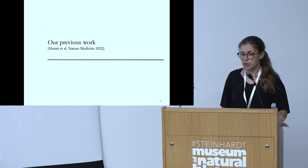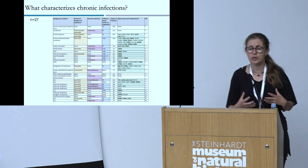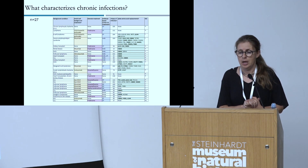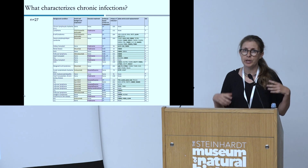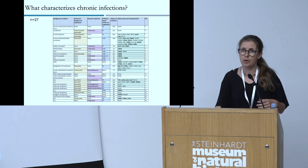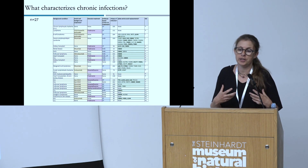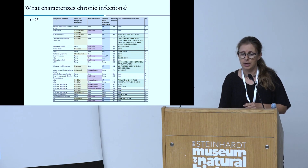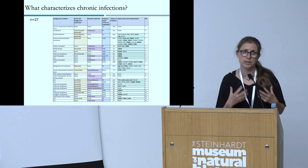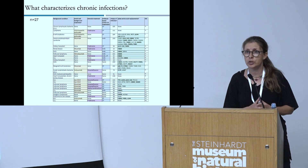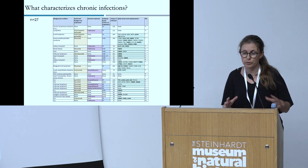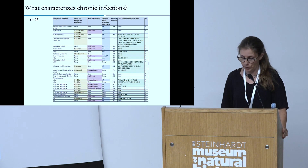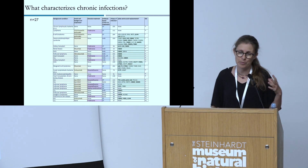In our previous work, we characterized a cohort of 27 such patients. This was a meta-analysis where we gathered many different case reports, so we had very in-depth data about every patient — their background condition, what treatments they received, and the genome sequence of the virus. Six of these patients we sequenced and followed ourselves, in collaboration with Ichilov with Yael Paran and Susie Myers. Because of lack of time, I won't get into depth about all the findings here.